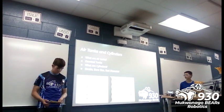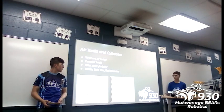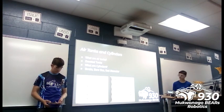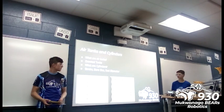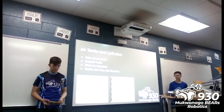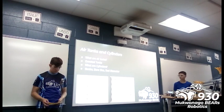Cylinders are what actually convert your compressed air into movement. There are two main types in FRC: double-acting and single-acting cylinders. Double-acting cylinders have two air inlet valves — one for pushing the piston forward and one for pushing it backward. A single-acting cylinder only has one air inlet valve and has a spring that pushes it back the other way. Single-acting is simpler, but double-acting gives you a lot more reliability, which is why we tend to use those.